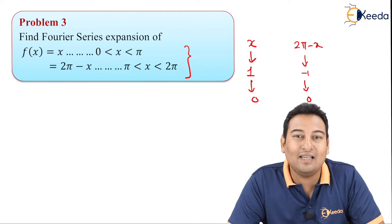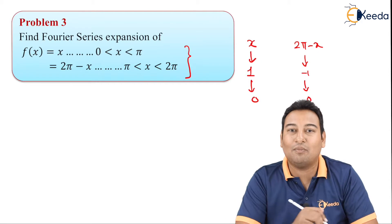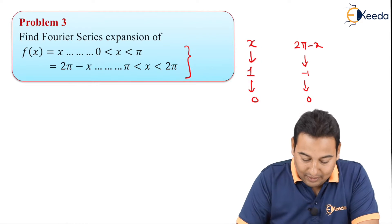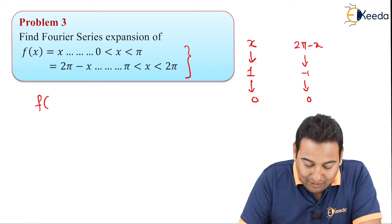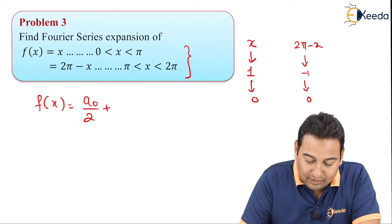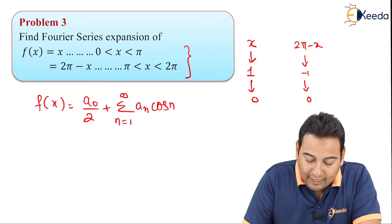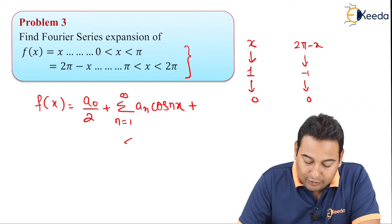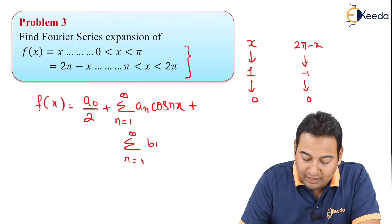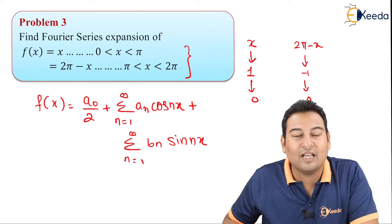Three very important points to remember: use brackets properly, note sine counter at nπ, and always simplify before substitution. The Fourier series is: f(x) = a₀/2 + Σ aₙcos(nx) + Σ bₙsin(nx). We need to find the three coefficients a₀, aₙ, and bₙ.